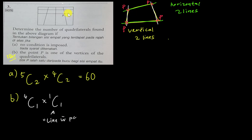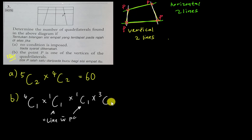For the horizontal side, there's also a horizontal line through P — that's another 1C1. Then I have three remaining horizontal lines to choose one more from, giving 3C1. Normally I just ignore both 1C1 terms and compute 4 times 3, which gives 12.